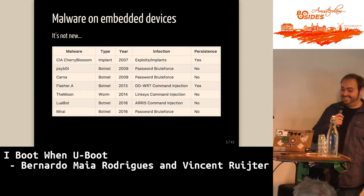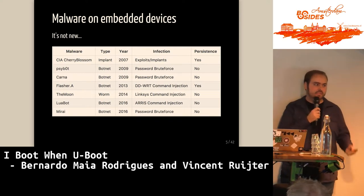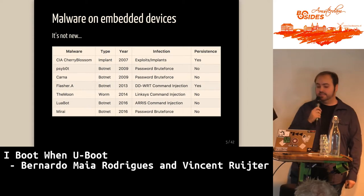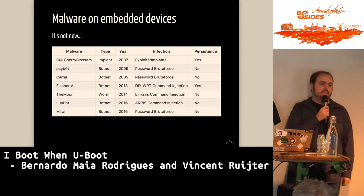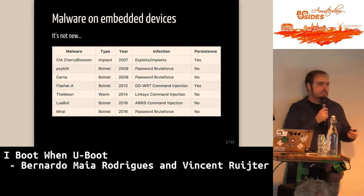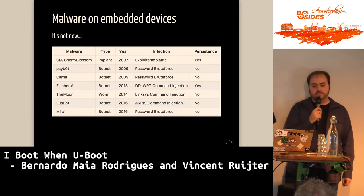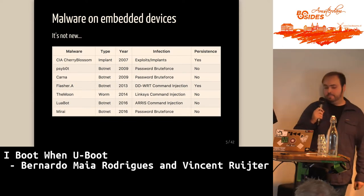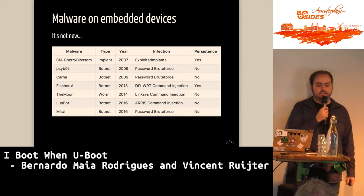Malware targeting embedded devices — spoiler alert — is not something new. There are lots of malware already targeting embedded devices. The CIA Cherry Blossom, from leaked WikiLeaks documents, describes creating backdoor firmwares that can be flashed onto home routers. There are also known botnets like Mirai, targeting embedded devices using weak passwords, and flasher.a, which was basically a DD-WRT modified firmware.